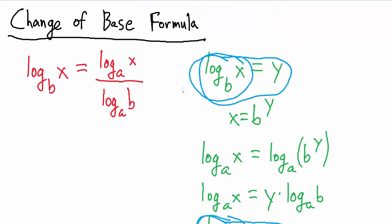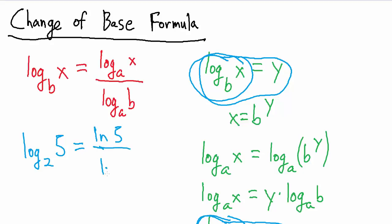So what's so useful about this? Well this helps us evaluate things like the base 2 log of 5. If you look at your calculator, chances are it doesn't have a base 2 option, but you could use the change of base formula to convert to a base that is on your calculator. Most calculators have base 10 or base E — the common log and the natural log. So we could use the change of base formula, convert to base E, and we'll have natural log of 5 over natural log of 2.